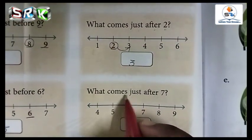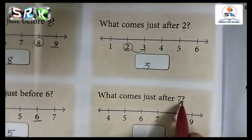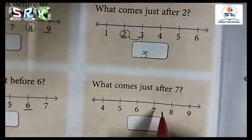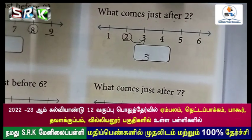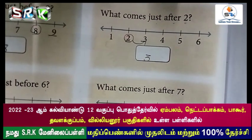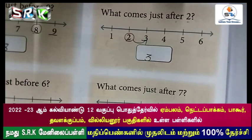Next one: what comes just after 7? See 7 — 7 after number is 8. Write 8 in the box.